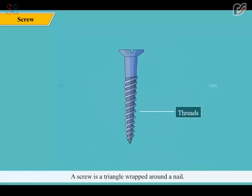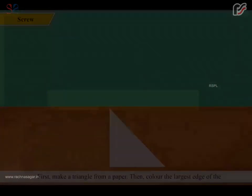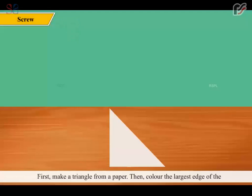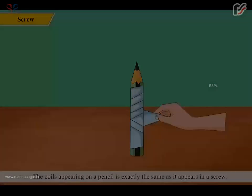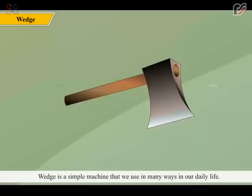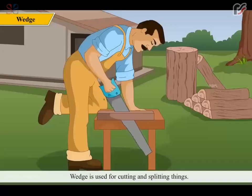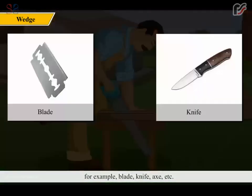A screw is a triangle wrapped around a nail. One can do a simple experiment to make a screw: first, make a triangle from paper, then color the largest edge of the triangle and wrap it around a pencil. The coils appearing on the pencil are exactly the same as they appear on a screw. A wedge has two inclined planes placed together in the shape of V. Wedge is a simple machine used in many ways in our daily life for cutting and splitting things. Many garden and agricultural implements are wedges — for example, blade, knife, axe, etc.